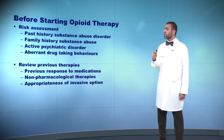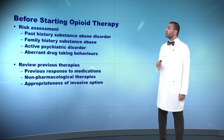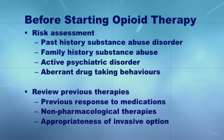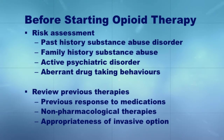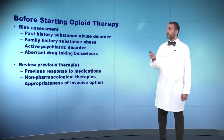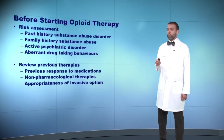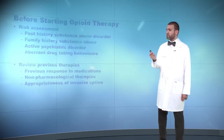Before signing the opioid, as I said, risk assessment: you have to assess each and every patient for past history of substance abuse, family history of substance abuse, active psychiatric disorder, or apparent drug-seeking or drug-taking behavior. You also have to review the previous therapies, previous response to medication, non-pharmacological therapy, and appropriateness for invasive options.